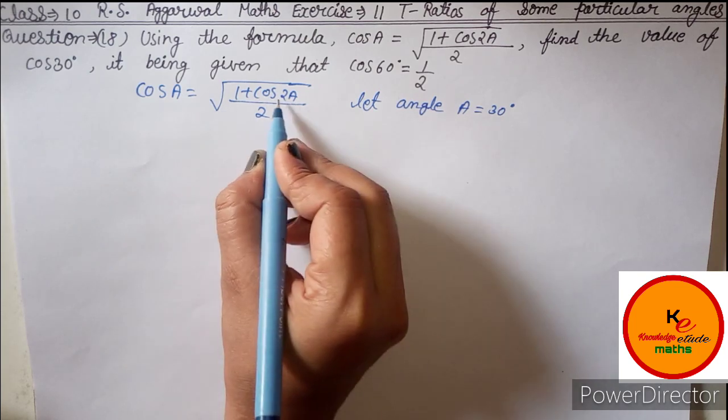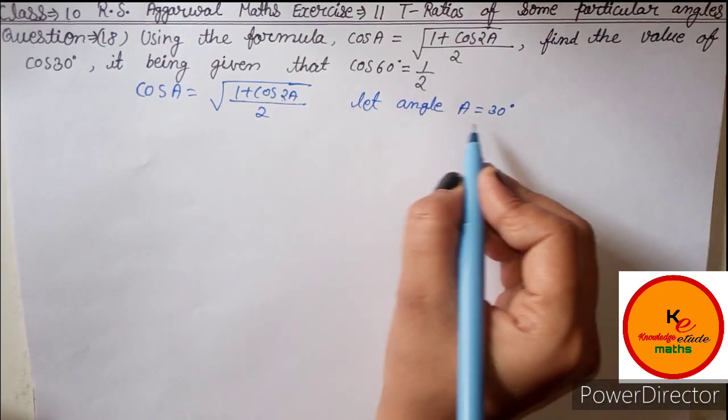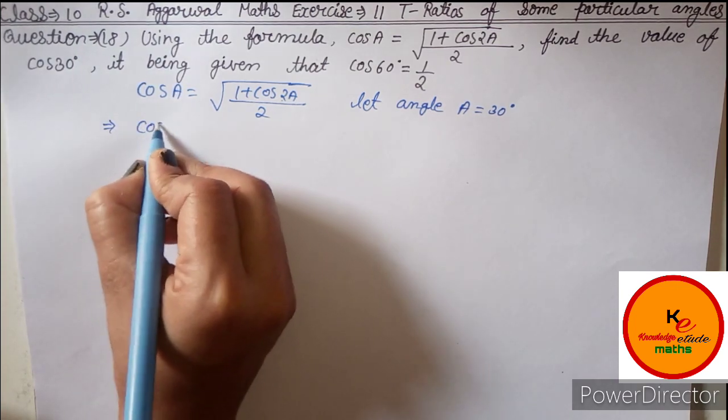When you put 30 here and multiply by 2, you get 60, whose value is given. That's why you can only put 30 here and cannot put any other angle.